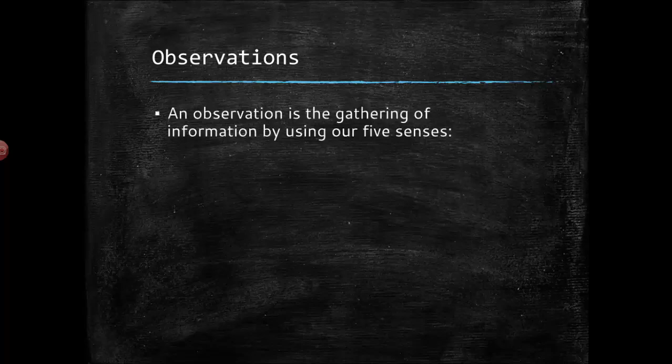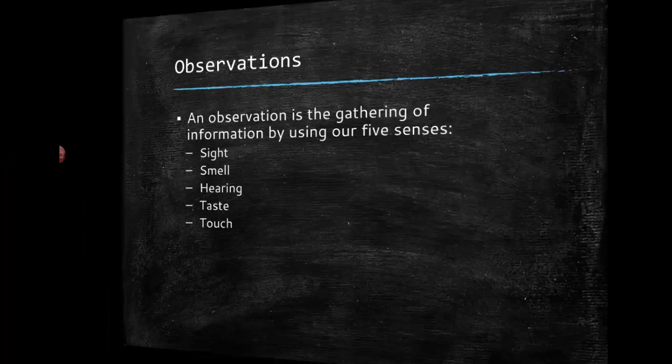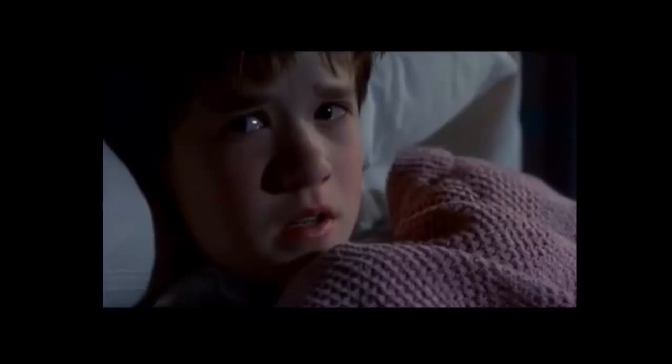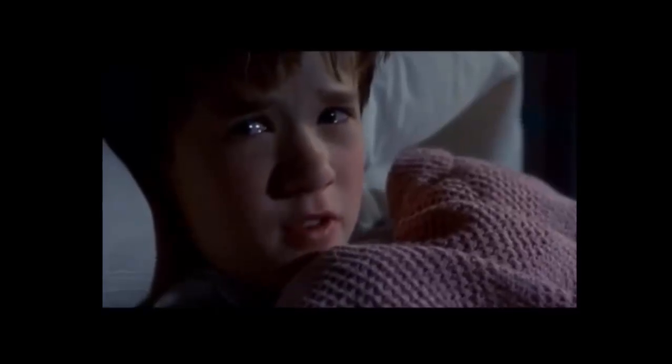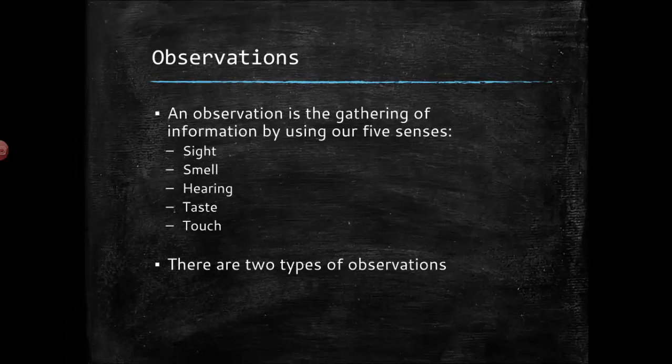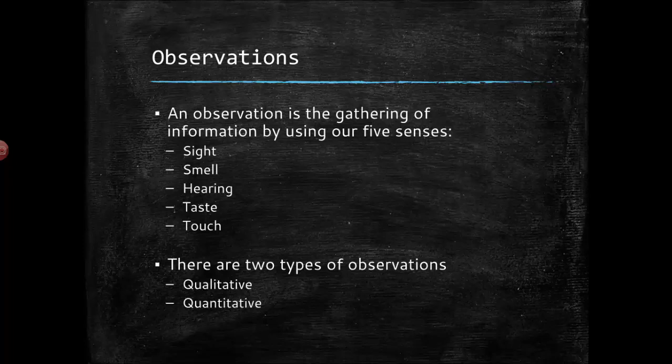So to start with observations. An observation is a gathering of information by using our five senses. For a little refresher our five senses are of course sight, smell, hearing, taste, and touch. If you happen to believe in a sixth sense we should probably talk after class. There are two types of observations that you can actually make using those senses. There are what are called qualitative observations and there are quantitative observations. You need to be able to do both of those things in order to be very good at observing.